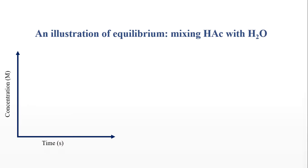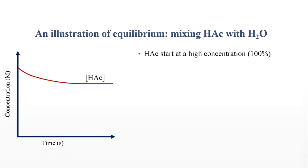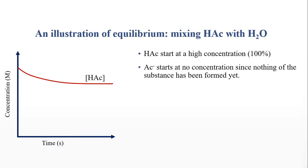As natural scientists, we like to illustrate phenomena using graphs. If we mix acetic acid with water, we start at 100% — nothing has been dissociated yet. As the reaction progresses, part of it will dissociate. The acetate ion, which is a weak base, starts at no concentration, but over time more and more acetate ions are formed. The concentration of acetic acid decreases over time and the concentration of the acetate ion increases over time.